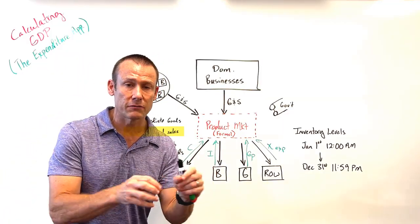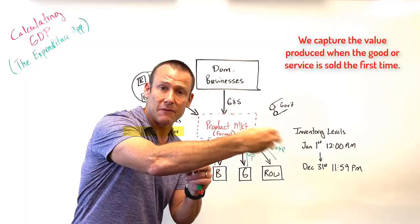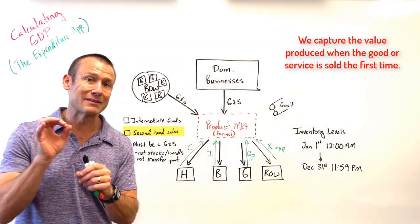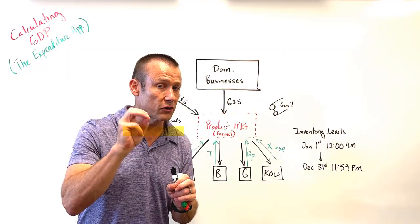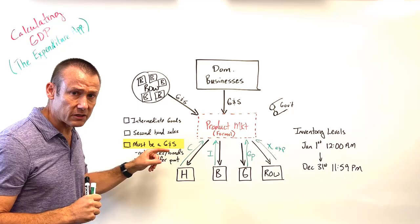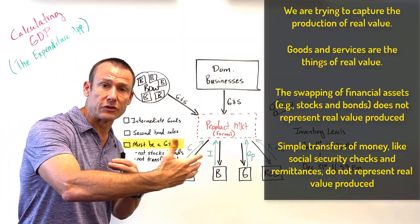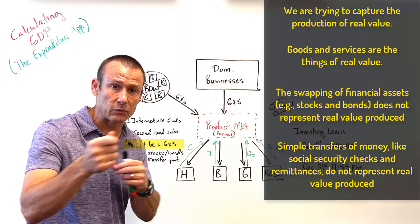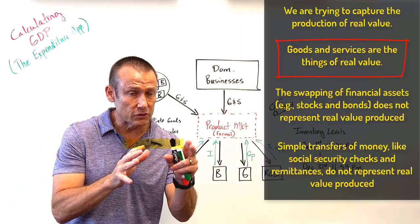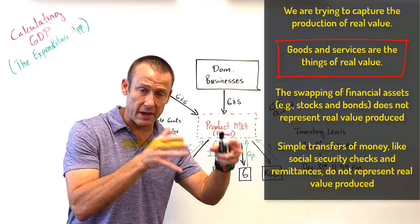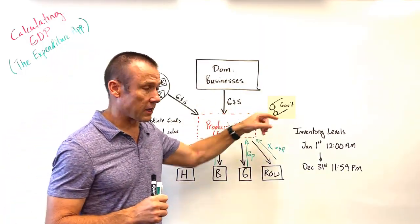Secondhand sales are not related to the production of new value — we capture the value of a good in its first sale. Any sales that happen after the initial sale we do not count. Additionally, we're only focused on goods and services, not on stocks and bonds, and not on transfer payments like a social security check — that's just a transfer of money, not a purchase of goods or services.